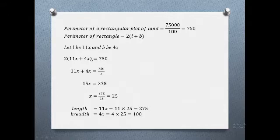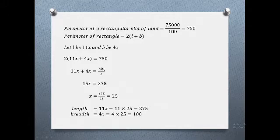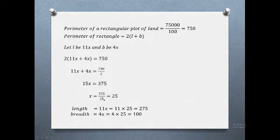So the formula is 2 times (11x plus 4x) equals 750. Solving: 375 divided by 15 equals 25. So x equals 25.